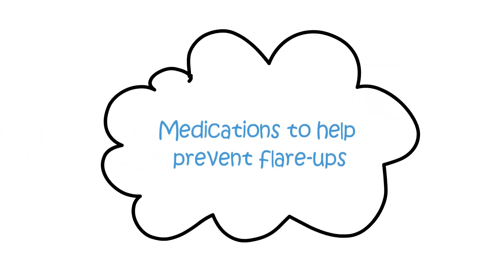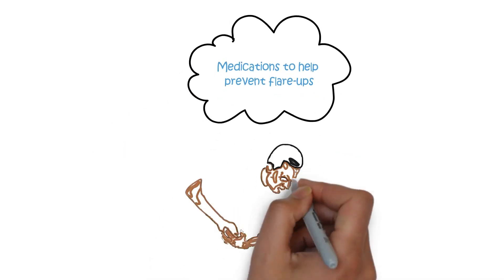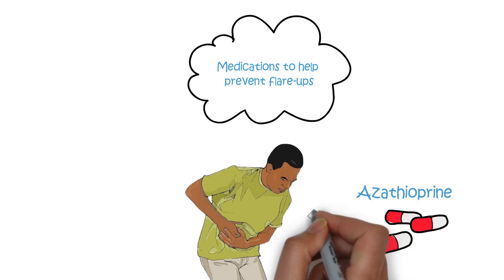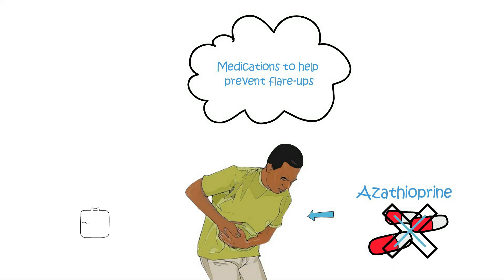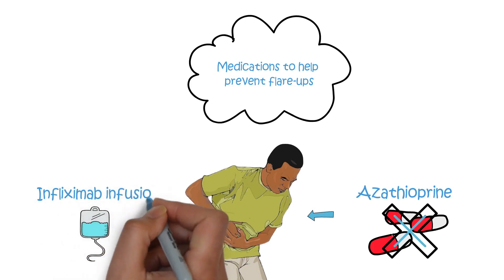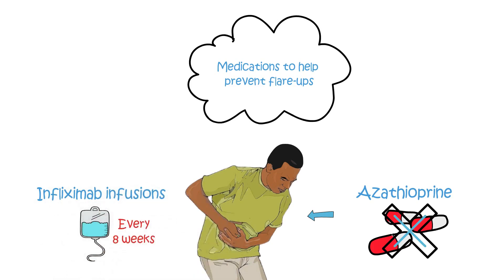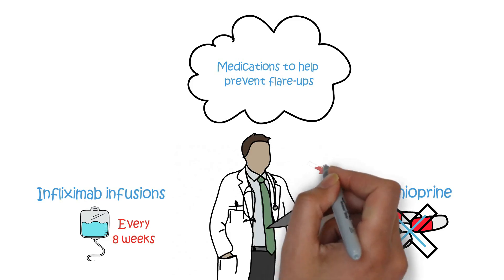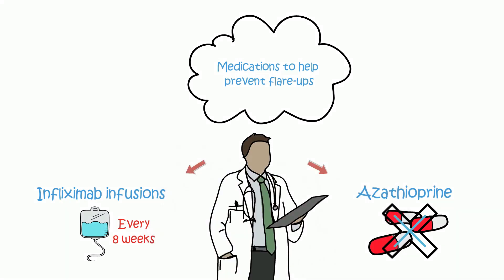Medications to help prevent flare-ups. To reduce the chances of a flare-up, immunomodulator medicine such as azathioprine, mentioned earlier, is most commonly used to prevent and reduce the chances of flare-ups. If immunomodulators have not worked, then biological therapy such as infliximab infusions may also be used every eight weeks. Your specialist healthcare professional will discuss the pros and cons of each option with you before initiating.